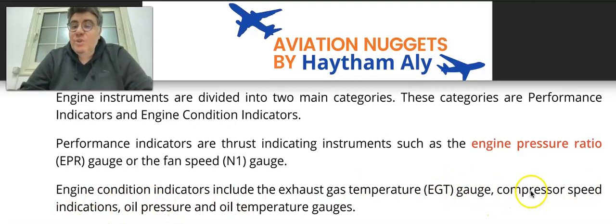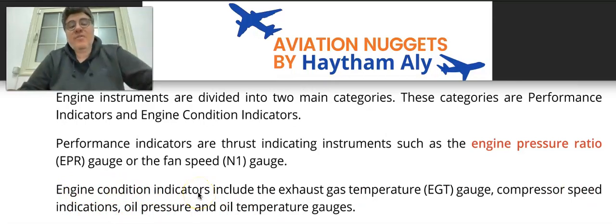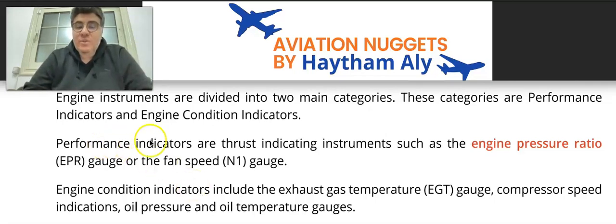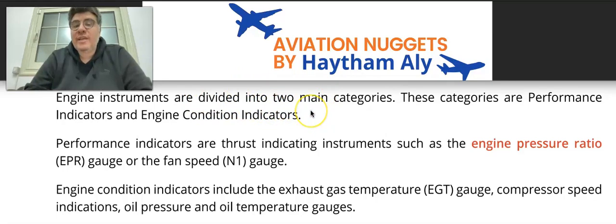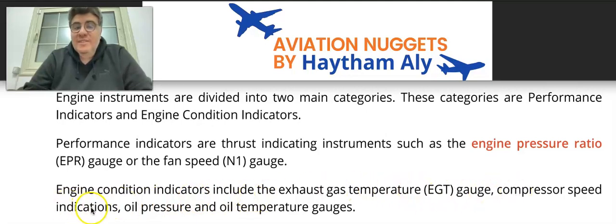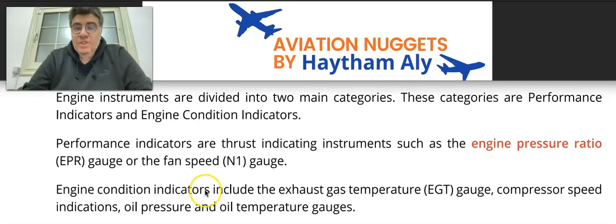N2, compressor speed indication, is also an engine condition indicator. So for thrust measurement and engine condition monitoring, we have two categories: performance indicators — such as EPR and N1 — and engine condition indicators — such as EGT, N2 compressor speed, and oil pressure and temperature gauges used for engine condition monitoring.